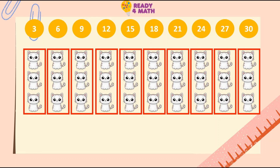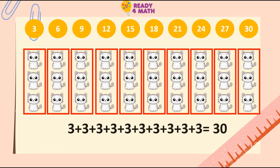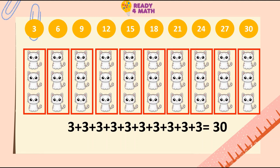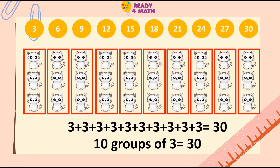Aside from skip counting, we can also do repeated addition. Since there are 10 groups of 3, we need to add 3 ten times, and we'll get 30. Another way is to look at them in groups — 10 groups of 3, which is equal to 30. We can also write the multiplication sentence: 10 times 3 is equal to 30.